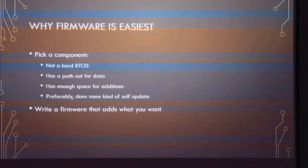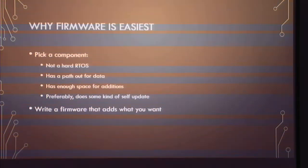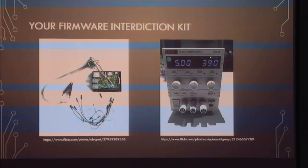Firmware is by far the easiest target in the hierarchy. Pick a component that isn't a hard real-time operating system, where timing doesn't need to be exact — if you have a little timing slop, you can add instructions. Make sure that component has a path out for data and enough firmware space for additions. If it supports self-updates, you can write code that causes it to lie about its own update and write firmware adding the functionality you want. This firmware introduction kit is just a power supply for in-circuit programming and a clip for a SPI gate — way easier than soldering all over a board, especially if your goal is not to leave evidence.